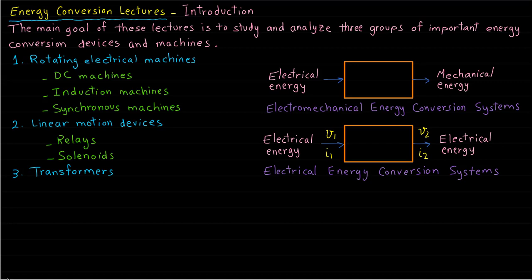Transformers are an example of such an energy conversion system. These machines and devices are able to do these conversions and interactions because of the presence of a magnetic field. Without the magnetic field, these devices and machines are not able to do the conversion. Any of these devices must have some circuit to establish the magnetic field, and the circuit used to establish the magnetic field is called a magnetic circuit.